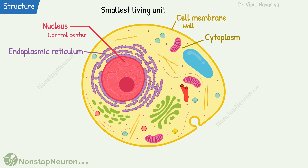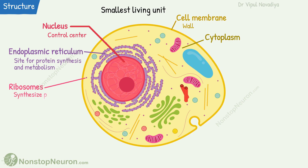The endoplasmic reticulum is a network of tubular and flat vesicles. It's a site of protein synthesis and many metabolic processes. Ribosomes are the factories that produce proteins. The Golgi apparatus is closely related to the endoplasmic reticulum — it's made up of stacked layers of thin and flat vesicles, mainly involved in processing proteins synthesized in the endoplasmic reticulum.